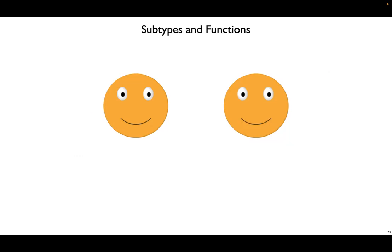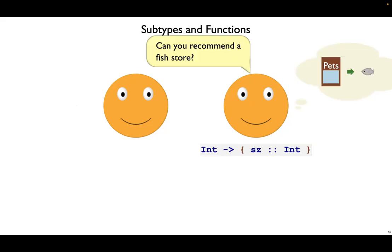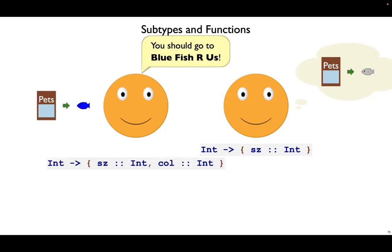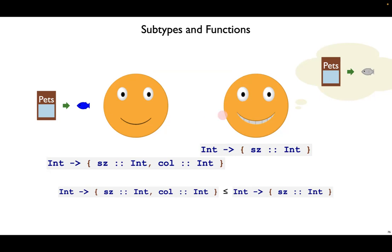Now let's say Bob is looking for a fish store, and a fish store is a function that takes in an int and returns a plain fish. He asks Alice to recommend a fish store, and she says I know a store, it's called bluefish r us. It takes in an int and gives you back a blue fish. Will this store work out for Bob? Yes, and that's because Bob is looking for a store that returns plain old fish, and what he gets is a store that returns blue fish, and so since a blue fish is a subtype of a plain fish, Bob will be happy with what he gets from that pet store.